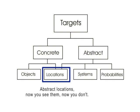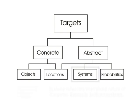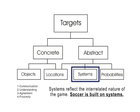Abstract locations are transitory reference points, like the offside line, blind side, goal side, between, and so on.